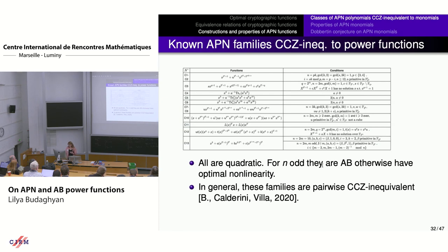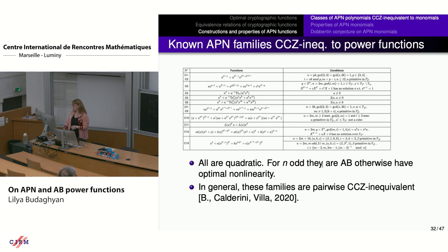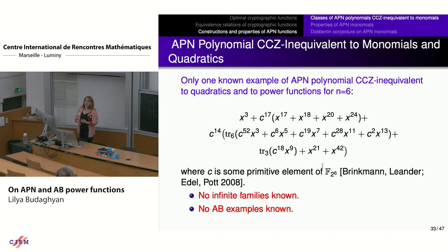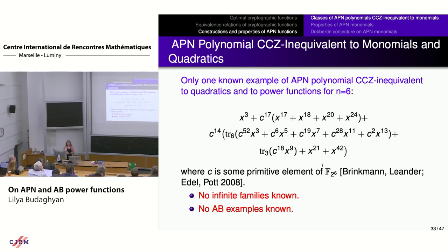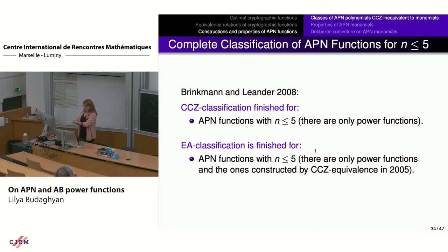Currently there are more than 10 infinite families of APN polynomials CCZ-inequivalent to power functions; when n is odd, these are also almost bent, and when n is even, they have optimal non-linearity. However, these families cover just the tip of the iceberg of existing APN and AB functions. There is only one known APN polynomial CCZ-inequivalent to both monomials and quadratics — found in 2008 for n=6 — and for 15 years no more examples have been found. For AB functions, we do not even have examples of such functions. The classification of APN functions is complete for n at most 5.